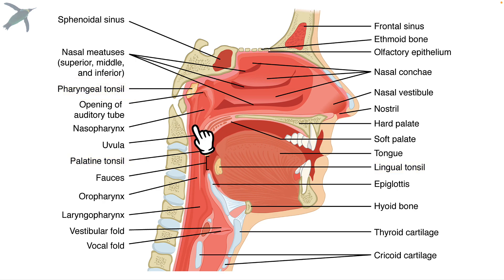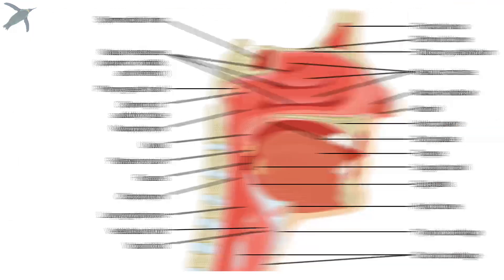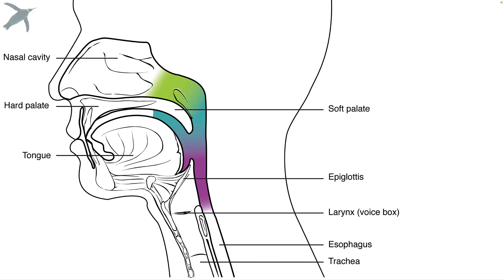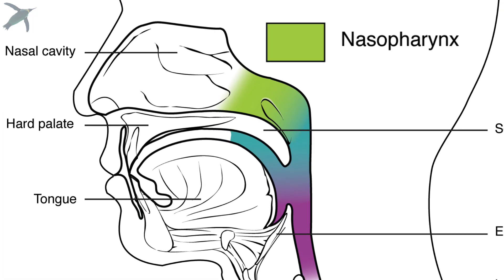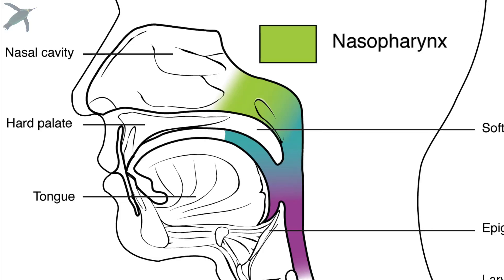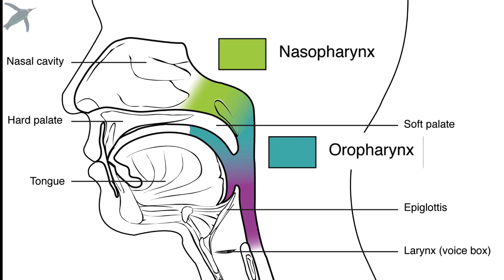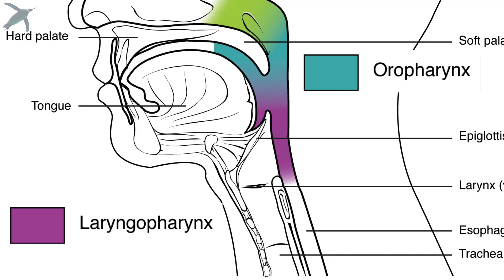All of this region is the pharynx, or the throat, and it's divided into three regions. We have the nasopharynx — the part of the throat most closely associated with the nasal cavity — the oropharynx, which is the part most closely associated with the oral cavity, and the laryngopharynx, which is most inferior and associated with the larynx.